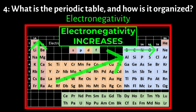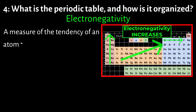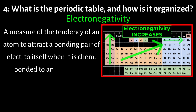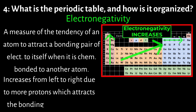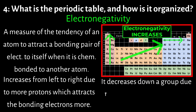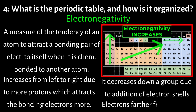Electronegativity is a measure of the tendency of an atom to attract a bonding pair of electrons towards itself when it is chemically bonded to another atom. It increases across a period from left to right due to more protons, which effectively attracts the bonding electrons more strongly. It decreases down a group because the addition of electron shells places the outer electrons farther from the nucleus, reducing the effect of nuclear attraction on those electrons involved in bonding.